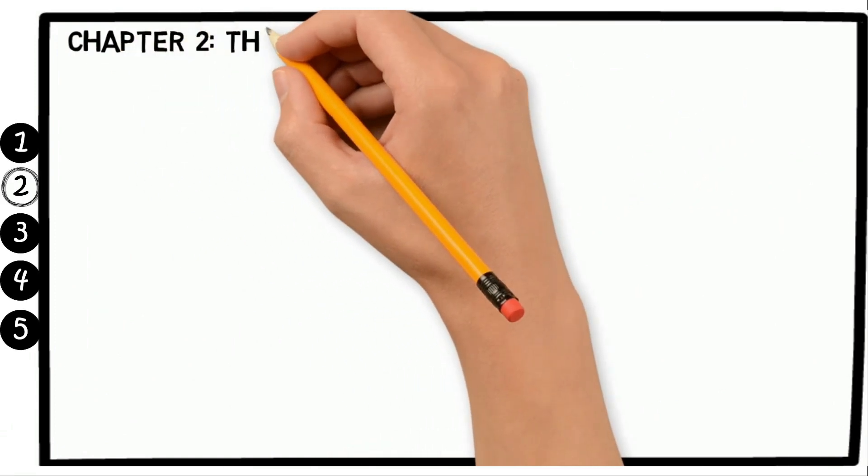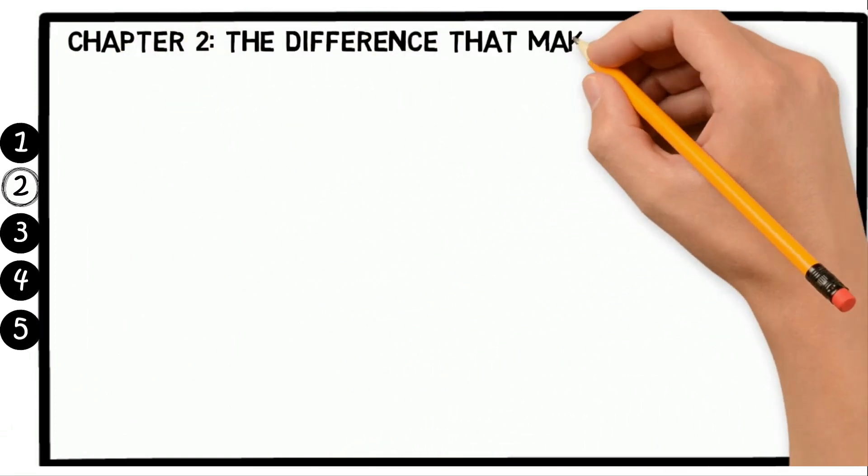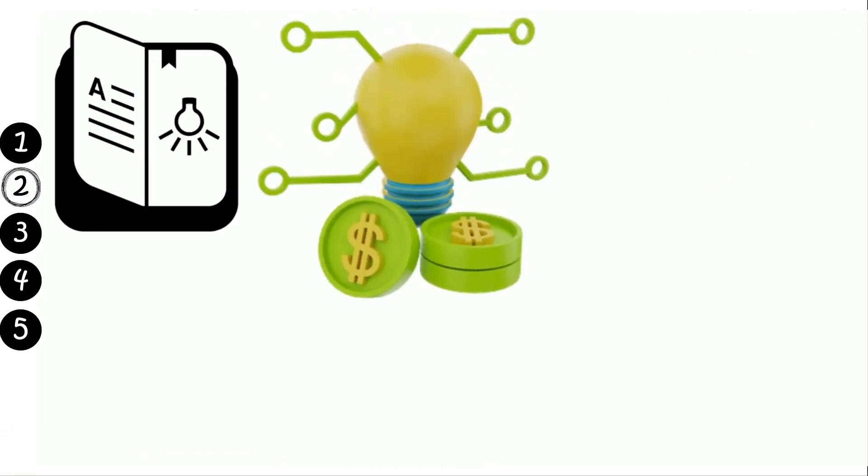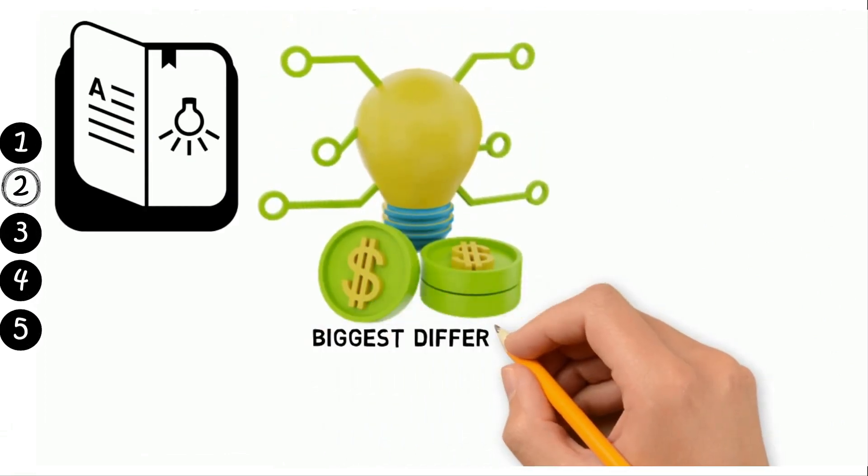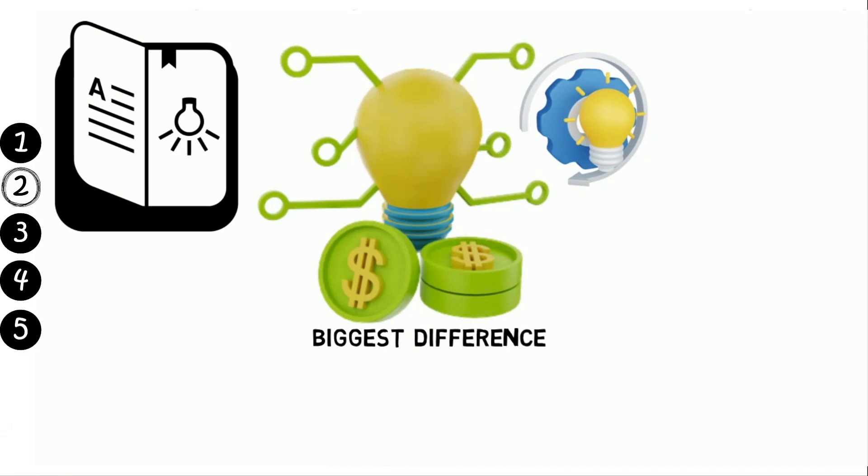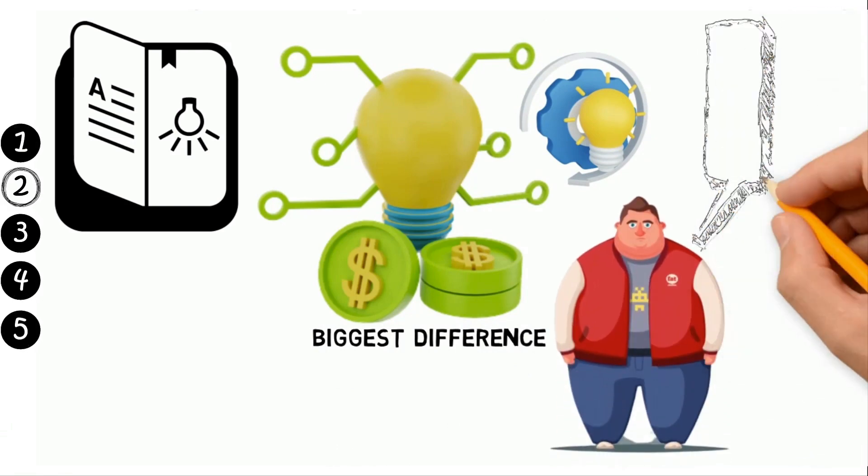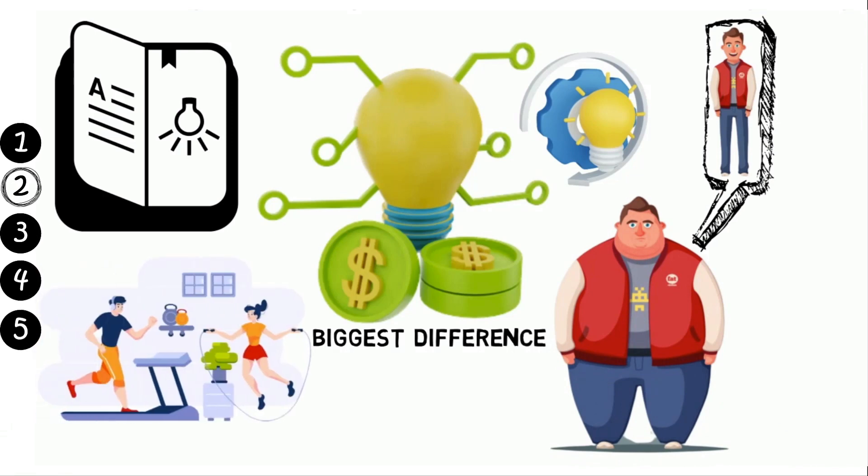Chapter 2: The Difference That Makes a Difference. In this chapter, Robbins argues that the things that make the biggest difference in our lives are usually the things that seem small. He gives the example of a person who wants to lose weight. They might think that going to the gym for an hour every day is what will make the difference.